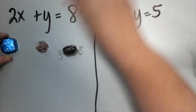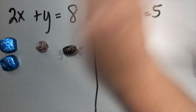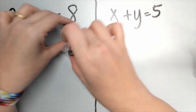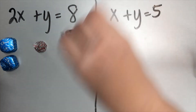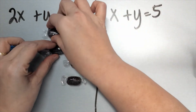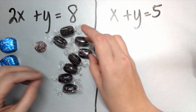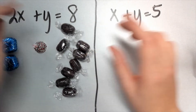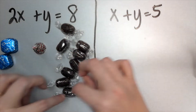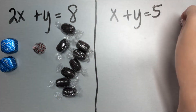To model this I need two X's — two dove chocolates — one candy cane kiss, and then eight root beer barrels. So two X's, one Y, and eight ones.